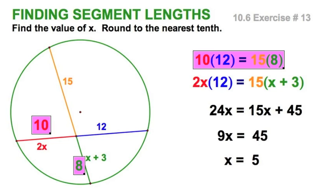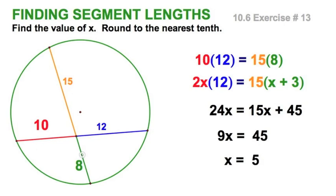That means that this red segment actually becomes 10 units and this one becomes 8 units. And let's just do that final check. 10 times 12, 120, 15 times 8, also 120. That checks out okay.